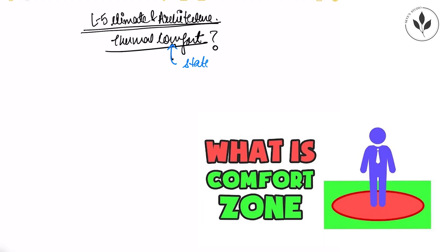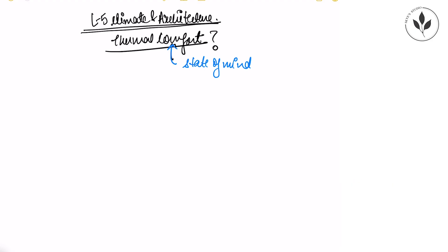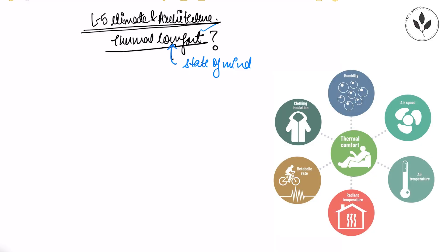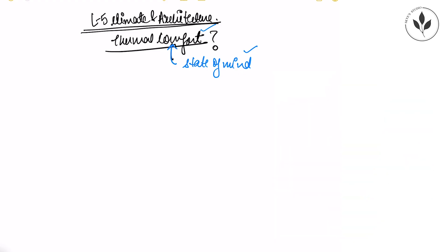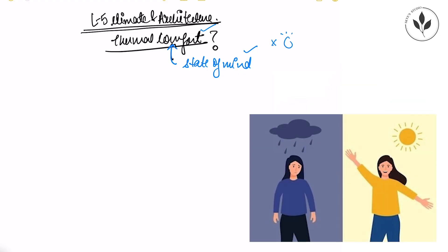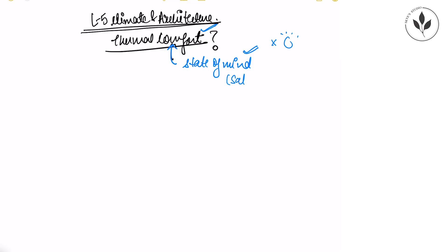Comfort is basically a state of mind because the definition of comfort can be different for me and different for you. I like being in sun and there might be some person who doesn't like being in sun. So that means our state of mind in terms of comfort in the sun is different because something that is giving me satisfaction will give me comfort.